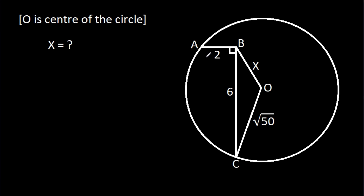In this video, we have been given that AB is 2, BC is 6, OC is a square root of 50, and OB is X. We have to find X.